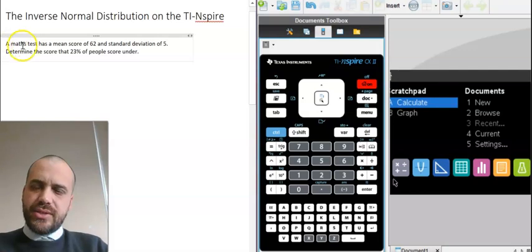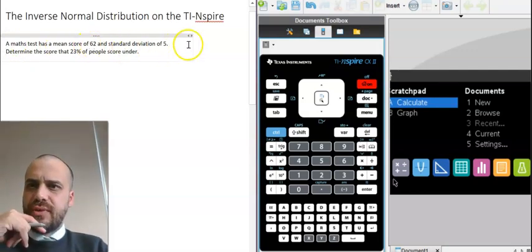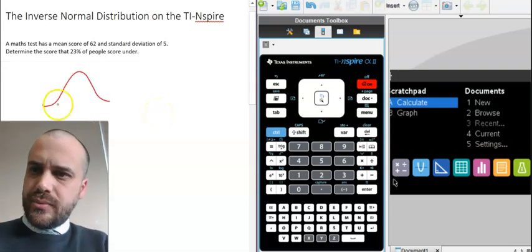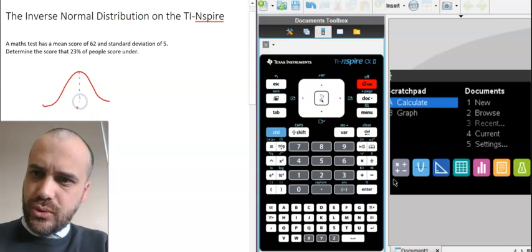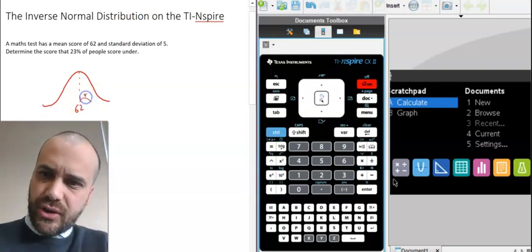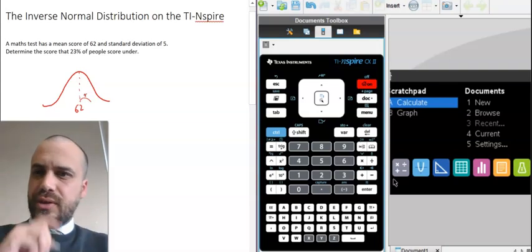So here's our question. A maths test has a mean score of 62 and a standard deviation of 5. Determine the score that 23% of people score under. Let's draw it. So there's our normal distribution. We have a mean score of 62 and the standard deviation there is 5.